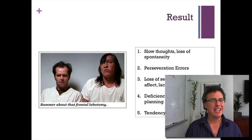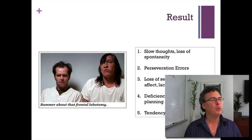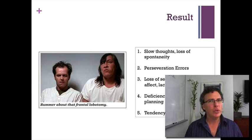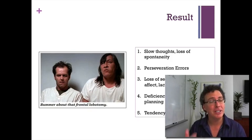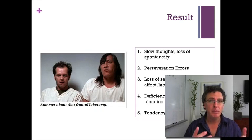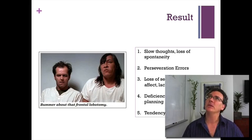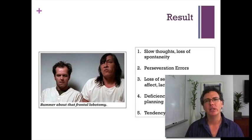Finally, they have this weird tendency to confabulate. Confabulation is kind of like lying, but weirder. When you and I lie, we're really trying to deceive to get something — and that's actually considered a very high-level cognitive ability that the frontal lobes play a big role in. But with a frontal lobe patient, if you say 'tell me about your brother' and they say 'I don't have a brother'...